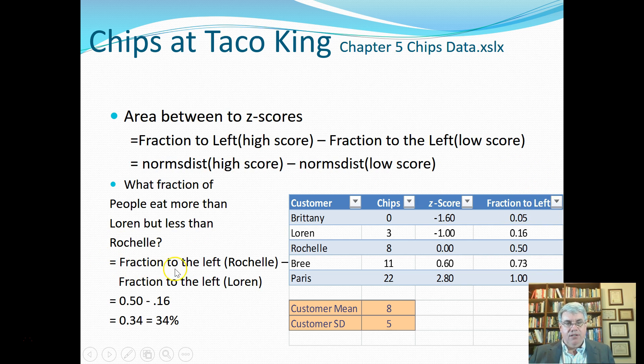So here we're going to have the fraction to the left of Rochelle, and so we look at Rochelle, the fraction to the left is 50%. Then we're going to subtract from that the fraction to the left of Lorraine. She's in the 16th percentile. There's only 16% of people that eat less than her, so it's going to be 0.50 minus 0.16 equals 0.34, and that's 34%. So 34% of the people that eat at Taco King eat between three and eight chips.